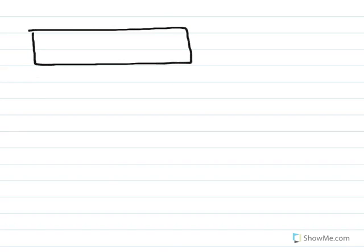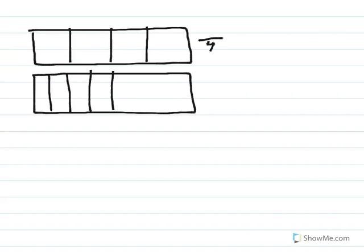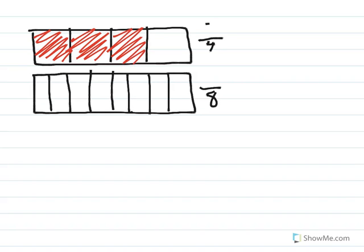For the first section we're going to draw two strips, two rectangles. Remember that when we're comparing fractions we want our wholes to be the same size. So try your best to make your fraction strips the same size. The first strip I'm going to divide into four pieces, so my denominator is going to be four. My second one I'm going to divide into eight pieces, so my denominator here is eight. Now I'm going to shade in — in the first one I'm going to shade in three, that makes my fraction three-fourths. And in the second one I'm also going to shade three, that makes my fraction three-eighths.